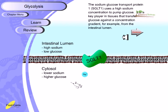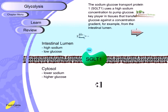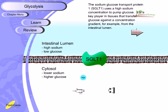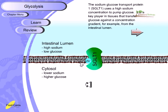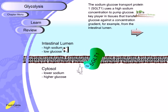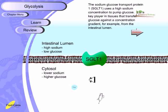The sodium-glucose transport protein 1 (SGLT1) uses a high sodium concentration to pump glucose against a concentration gradient. In this case, even if glucose is already high inside the cell, we still need to transport more glucose in to generate energy. Since this is against the concentration gradient, it requires a protein channel — SGLT1 — which utilizes the sodium ion concentration gradient to drive glucose transport from the extracellular space into the intracellular environment.